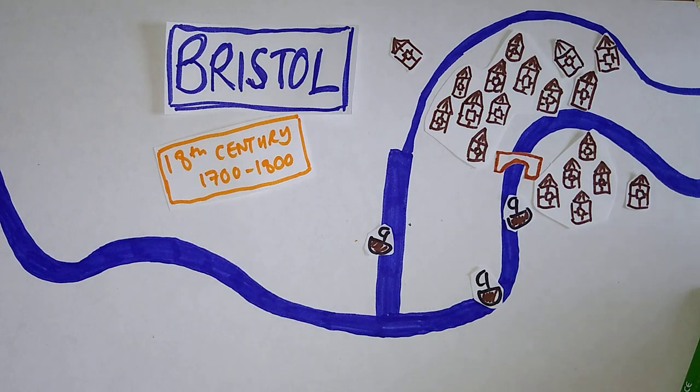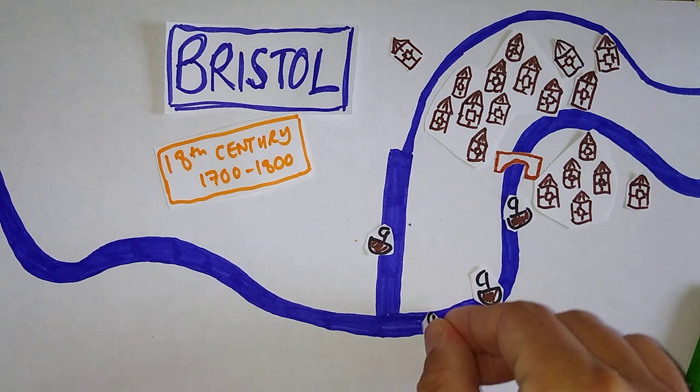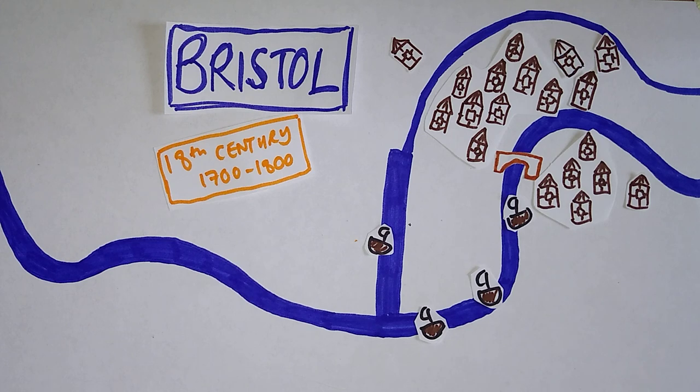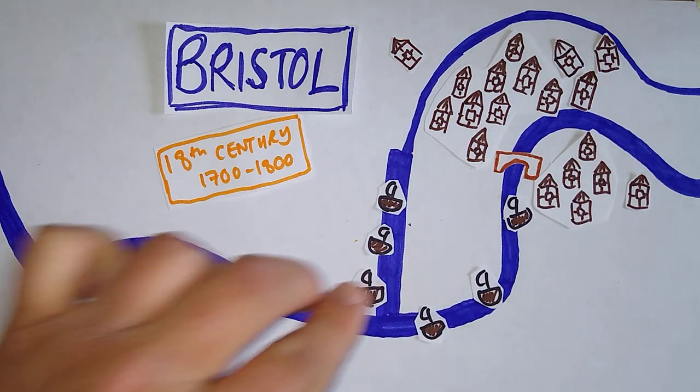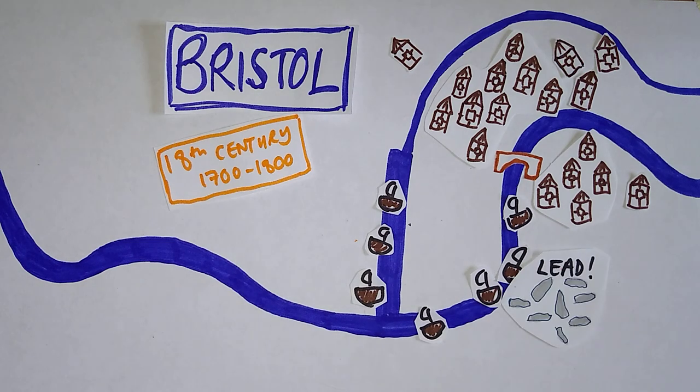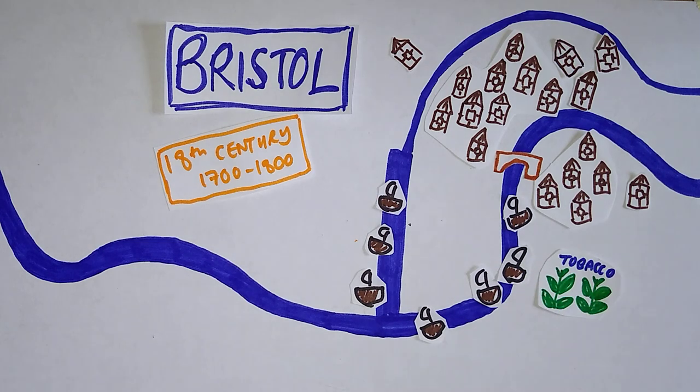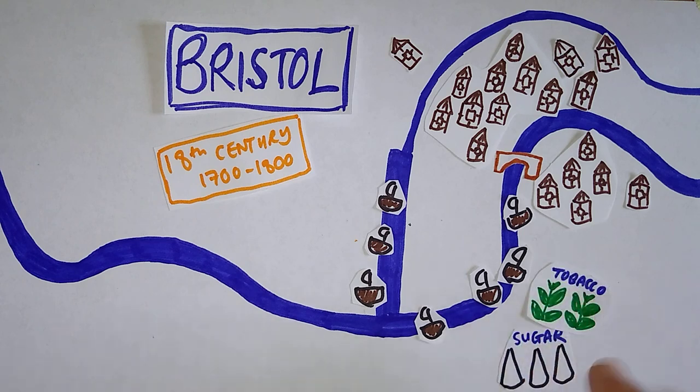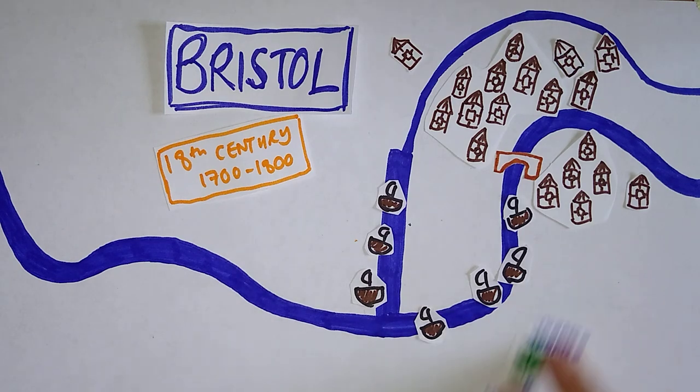And Bristol in the 18th century, as a result of that trade, is genuinely booming. And more and more ships are coming into the city. And more and more of those ships are trading in the goods from the slave trade. So they're taking lead out of the city and metal goods, and they're bringing back into the city tobacco and sugar at a vast scale. A vast scale. The profits from this trade were huge.